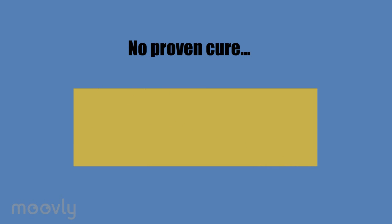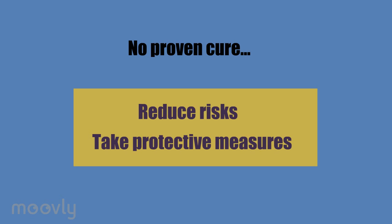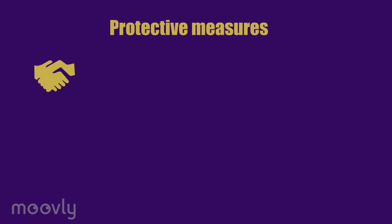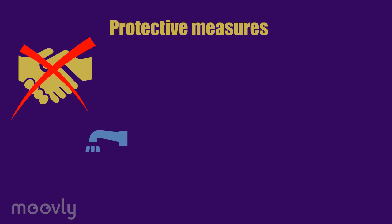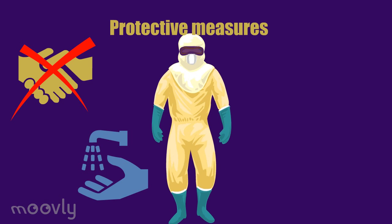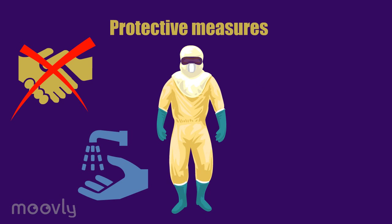Until a treatment or vaccine becomes available, the only way to prevent infection is reducing risks and taking protective measures. This includes avoiding unnecessary contact, ensuring proper hygiene, wearing protective clothing, prompt burial of victims, and putting suspected and infected people into quarantine.